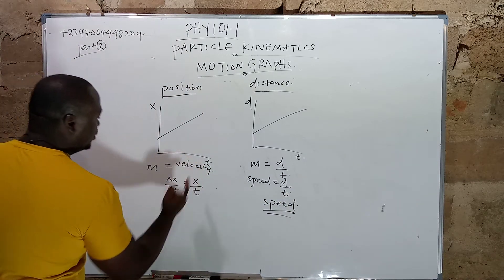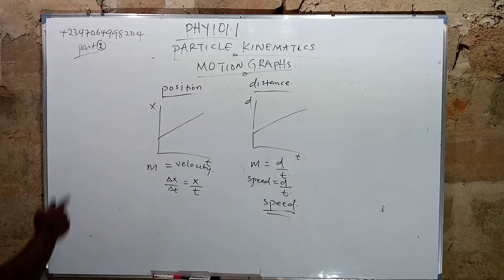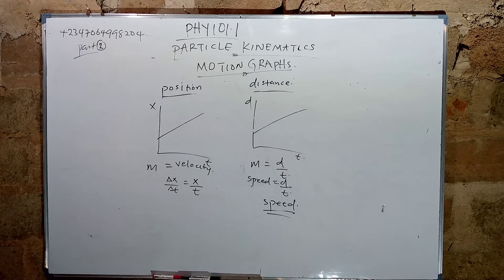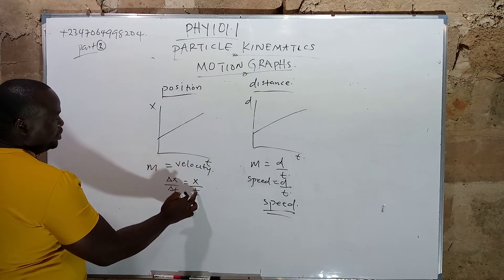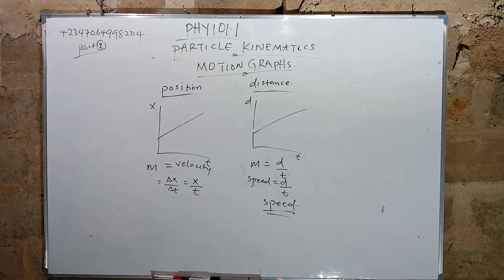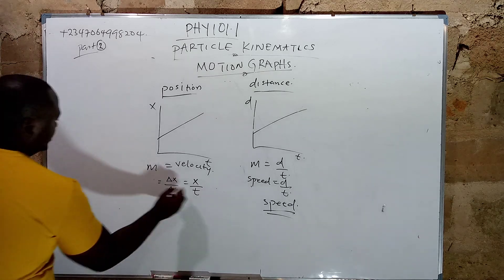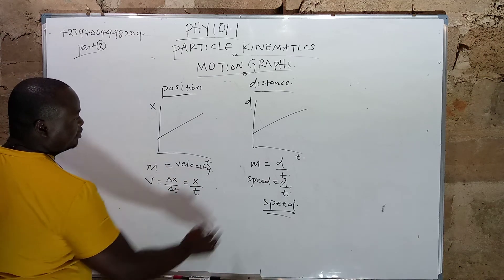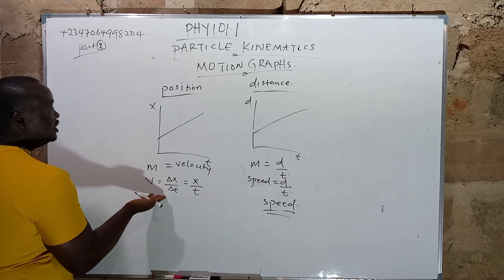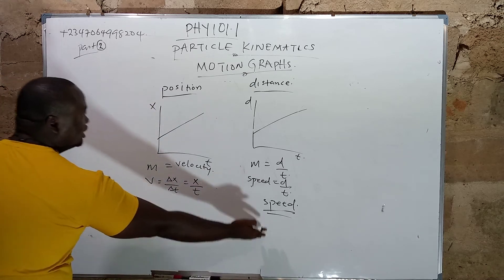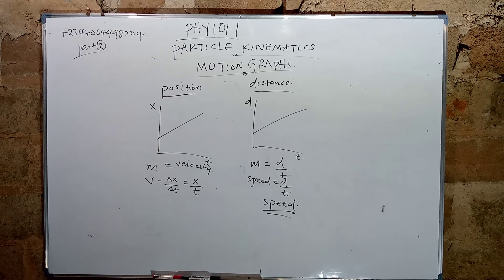Note also that speed is a scalar quantity. Displacement all over time gives you velocity — velocity is displacement all over time. Speed is distance all over time. So velocity is a vector quantity while speed is a scalar quantity. That is the difference between them — please note it very well.